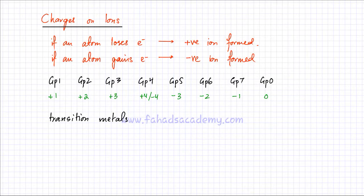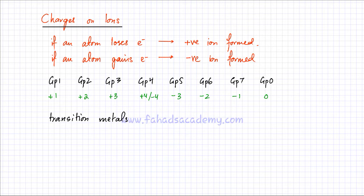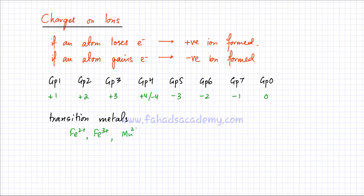We also have transition metals, which are present between group two and group three in the periodic table. Transition metals can lose a variable number of electrons. For example, iron could have a two plus charge, a three plus charge, or sometimes even a five plus charge. Manganese can have a two plus charge or a charge of plus seven. So their charges are variable.